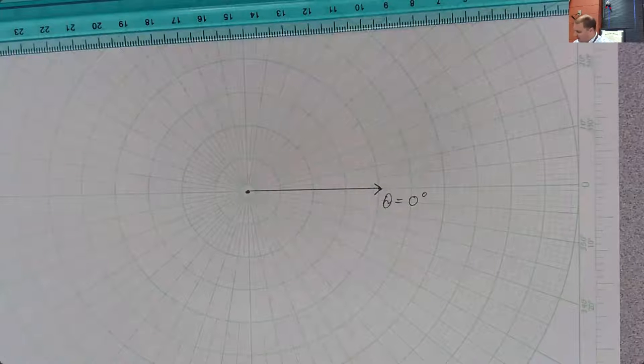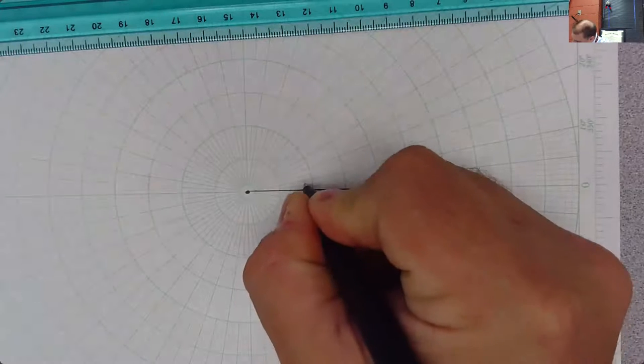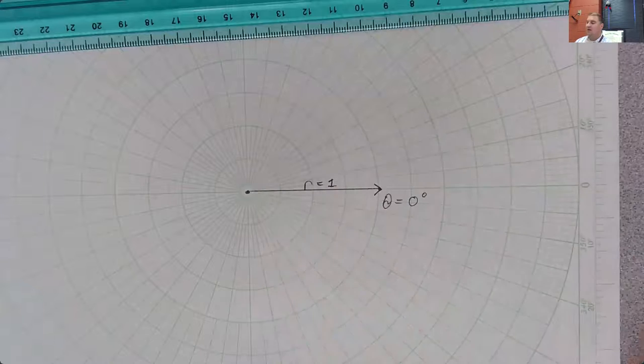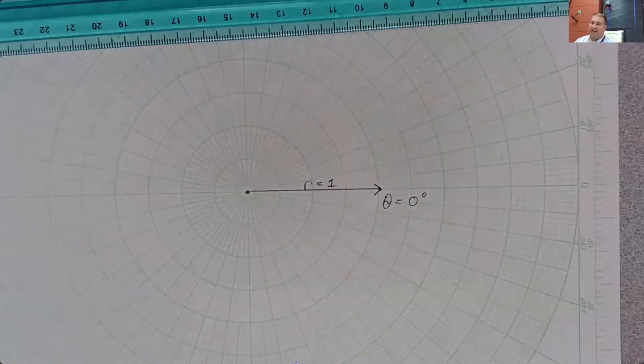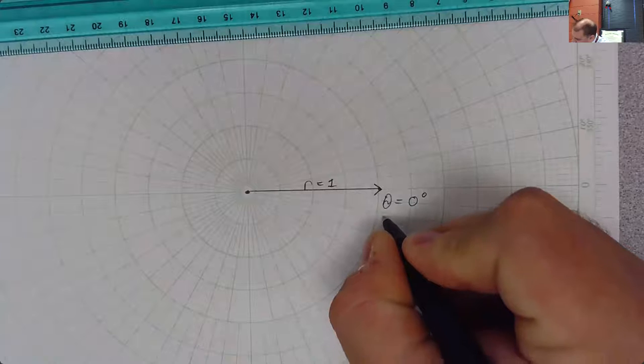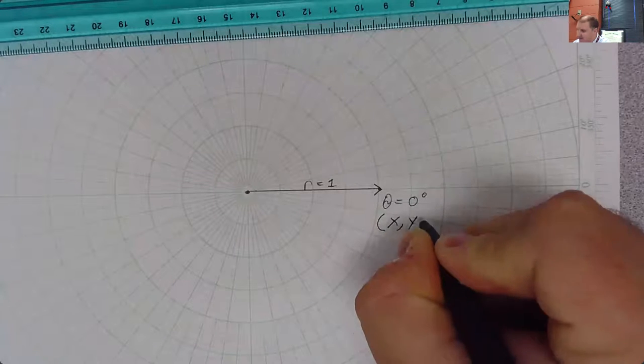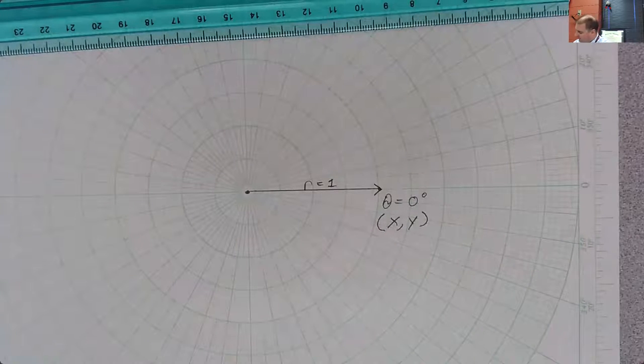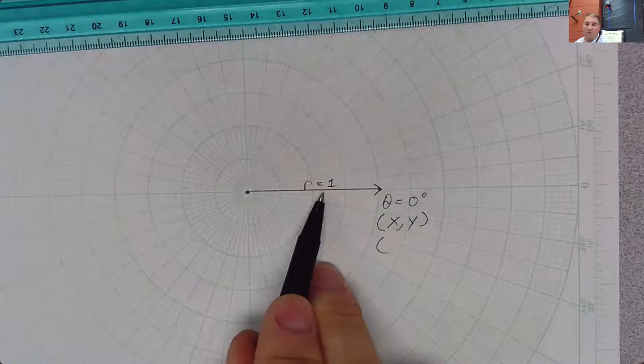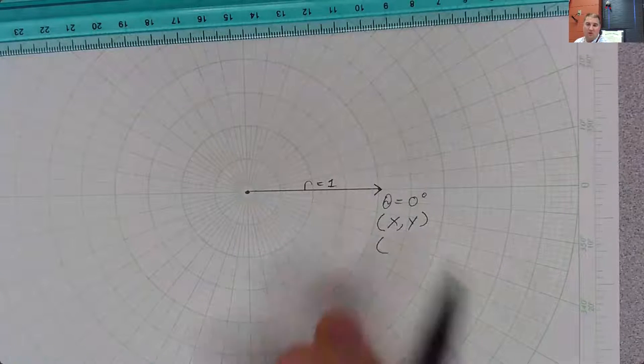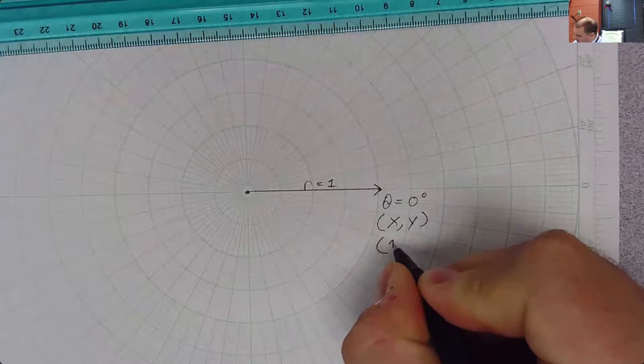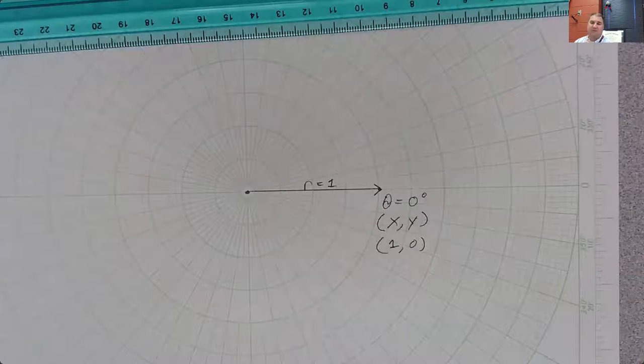So this would be an angle theta equals zero degrees. If you were trying to, and r is one here, and sometimes we use a lowercase r. So for this angle, have we moved in the Y direction at all? No, we've only moved in the X direction, correct? And so in XY coordinates, what you're going to have for an r of one for a unit vector here going around the circle, you're going to have one in the X direction and zero in the Y direction.